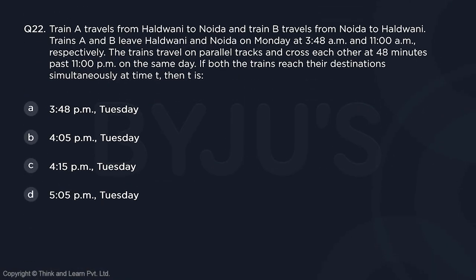Question number 22, time and distance. Let's go ahead. Train A travels from Haldwani to Noida. So we have two stations, Haldwani and Noida.